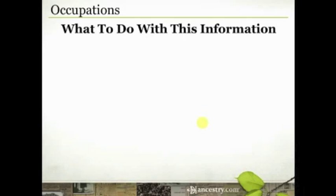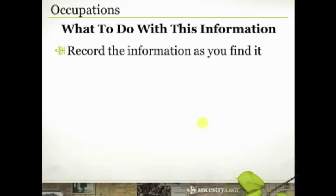That again is on rootsweb.com at the US Gen Web Whiz Kids website — they have that list of old jobs where you can go to see what a job means. Now let's talk about what to do with this information. I'll share what I do so you can start to see the possibilities available. I'll walk you through two case studies — examples of occupations that have shown up in my family and how I've recorded this information.